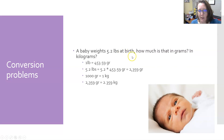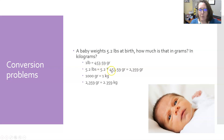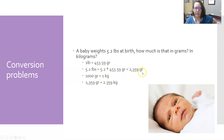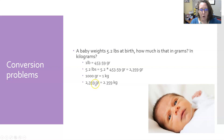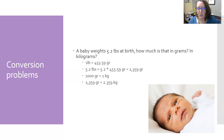For example, a baby weighs 5.2 pounds at birth — how much is that in grams and kilograms? One pound is 453.59 grams, so 5.2 pounds is 5.2 times 453.59, which equals 2,359 grams. Since 1,000 grams is one kilogram, you move the decimal three places to divide by 1,000, giving you 2.359 kilograms.